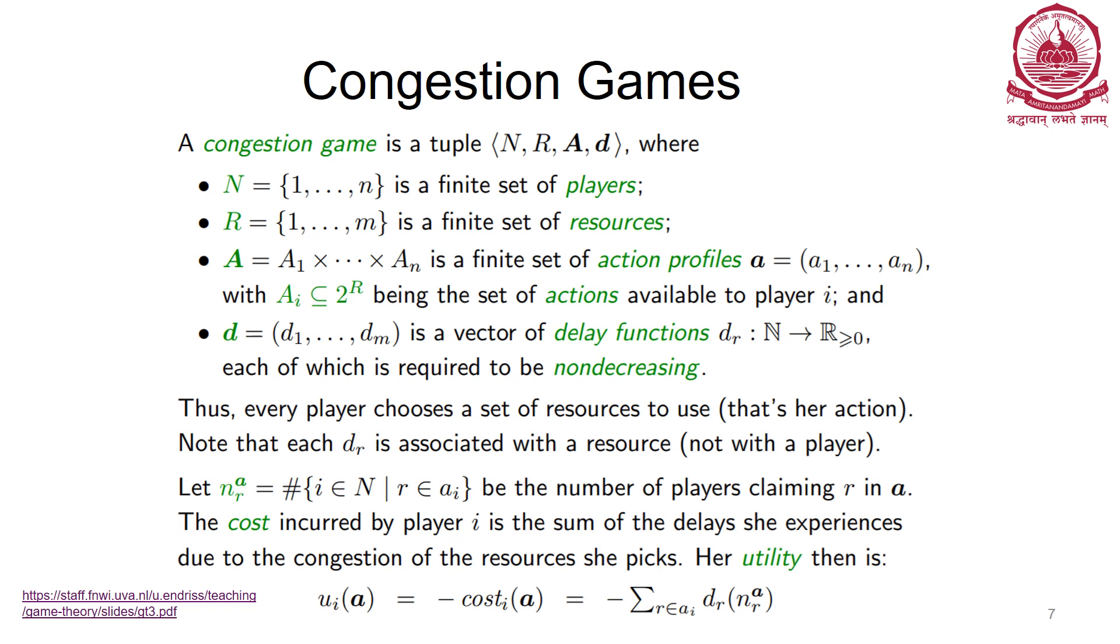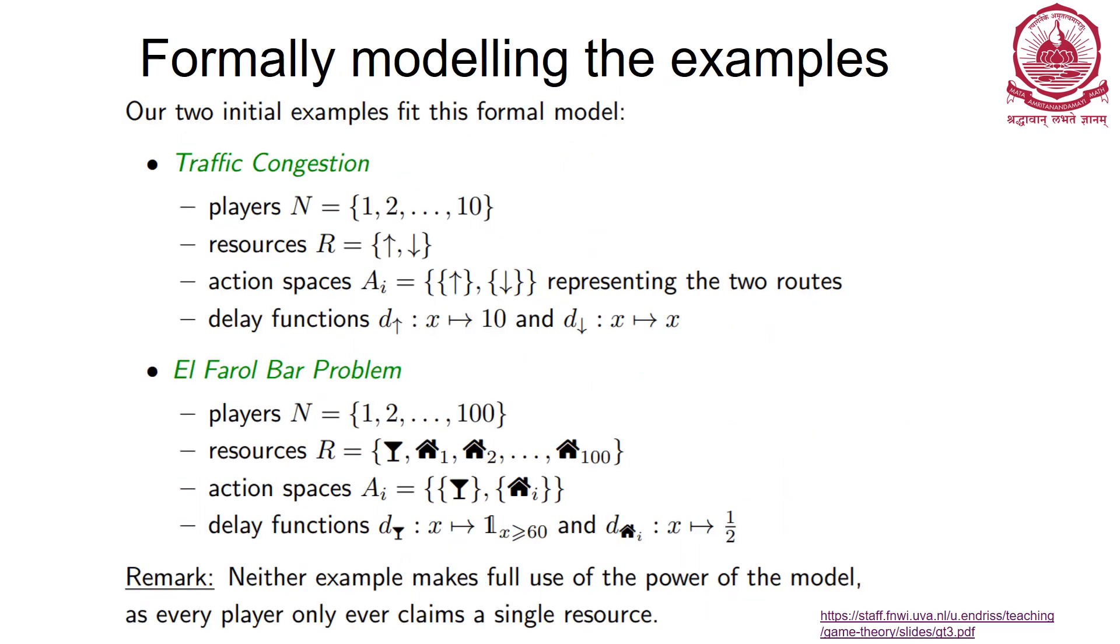Let's take the two samples that we have seen and formally model the previous examples. The traffic congestion: players are ten players, resources are going by one direction or going by the other direction, action spaces are the two routes using one of the two resources, delay functions: one is x implies 10, the other one is x implies x.